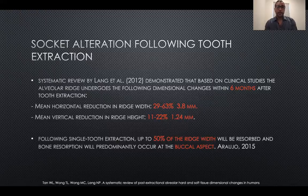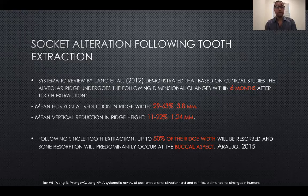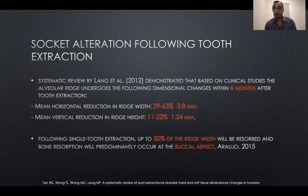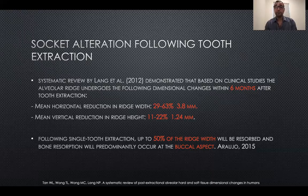What happens to the tooth socket after extraction? A systematic review by Lang found that horizontally we lose almost 3.8 millimeters on average — a range of 29 to 36 percent of the original width — over six months. The vertical reduction is a mean of 1.2 millimeters or 11 to 22 percent. A study by Dr. Araujo in 2015 concluded that 50 percent of the ridge width will be resorbed, mainly at the buccal aspect.